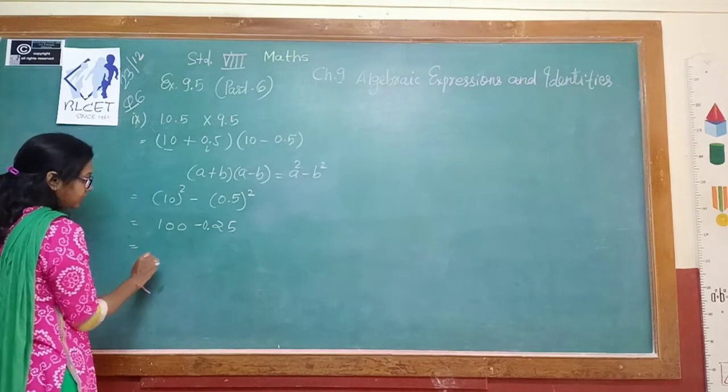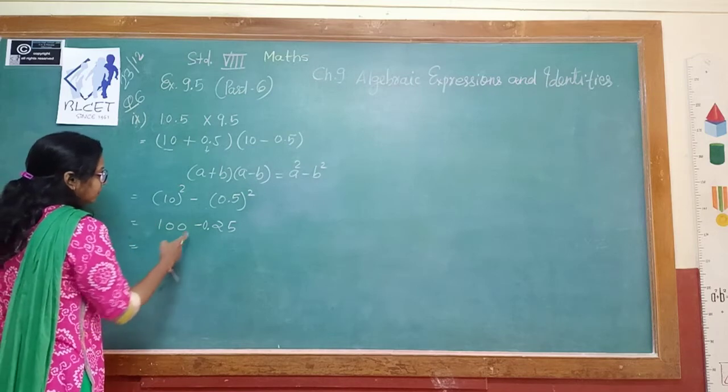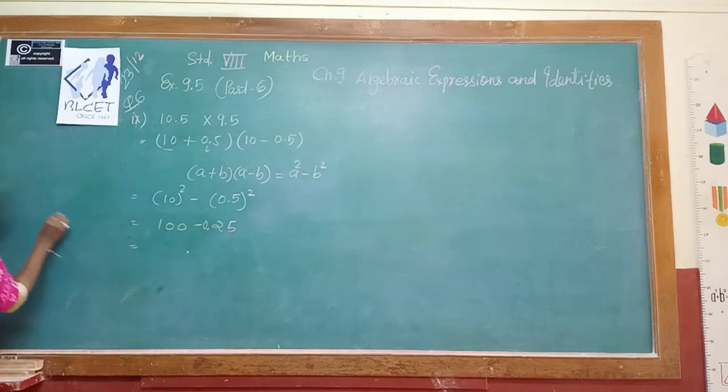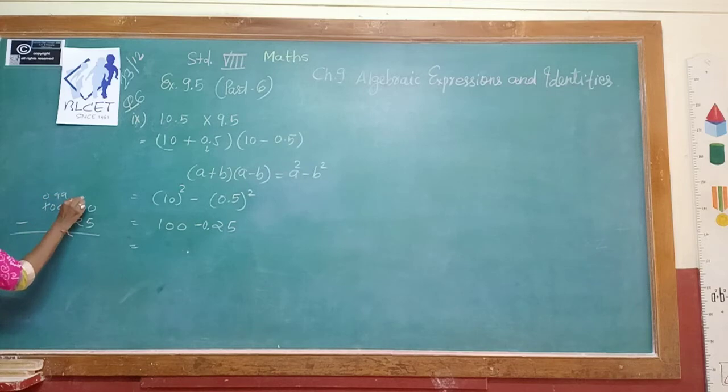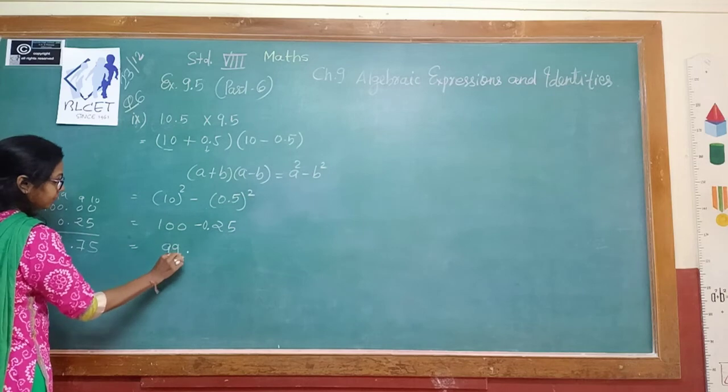Now do the subtraction. 100.00 minus 0.25. Working through each digit: 10 minus 5 is 5, giving us 99.75.